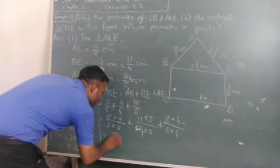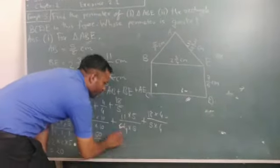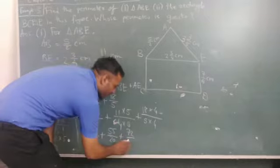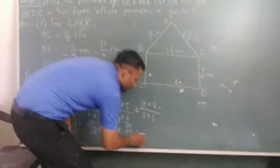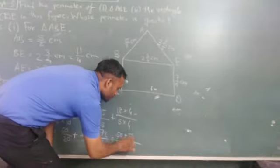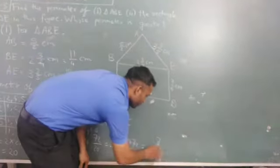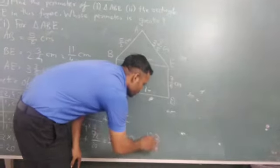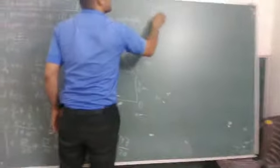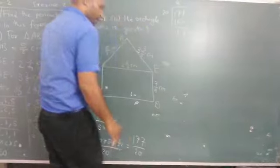Now: 5 times 10 is 50 over 20, plus 11 times 5 is 55 over 20, plus 18 times 4 is 72 over 20. So 50 plus 55 plus 72 equals 177 over 20. Dividing: 20 times 8 is 160, remainder is 17. So the answer is 8 and 17/20 cm.